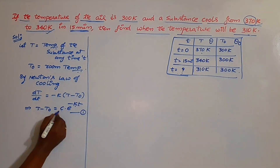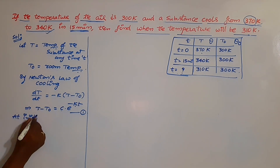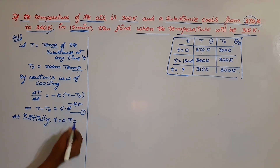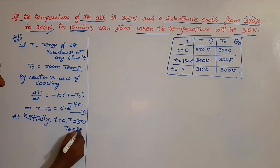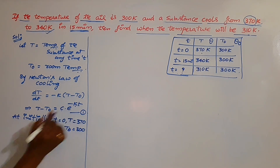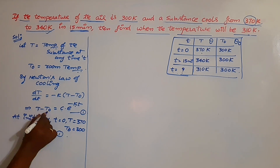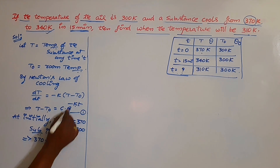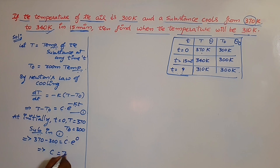Initially, at time t = 0, what is the temperature? Temperature is 370 Kelvins. What is T naught? It is 300 Kelvins. Replacing these values in the equation: T − T₀ = 370 − 300 = C · e^(−K×0). Since e^0 = 1, we get C = 70.